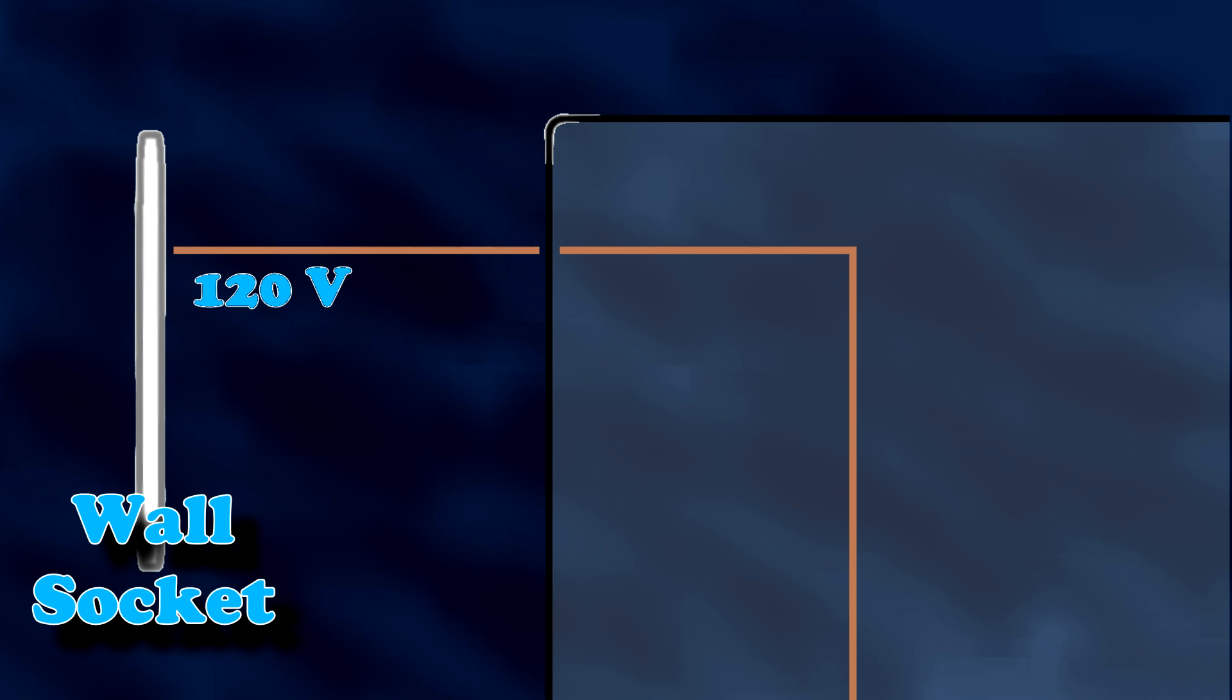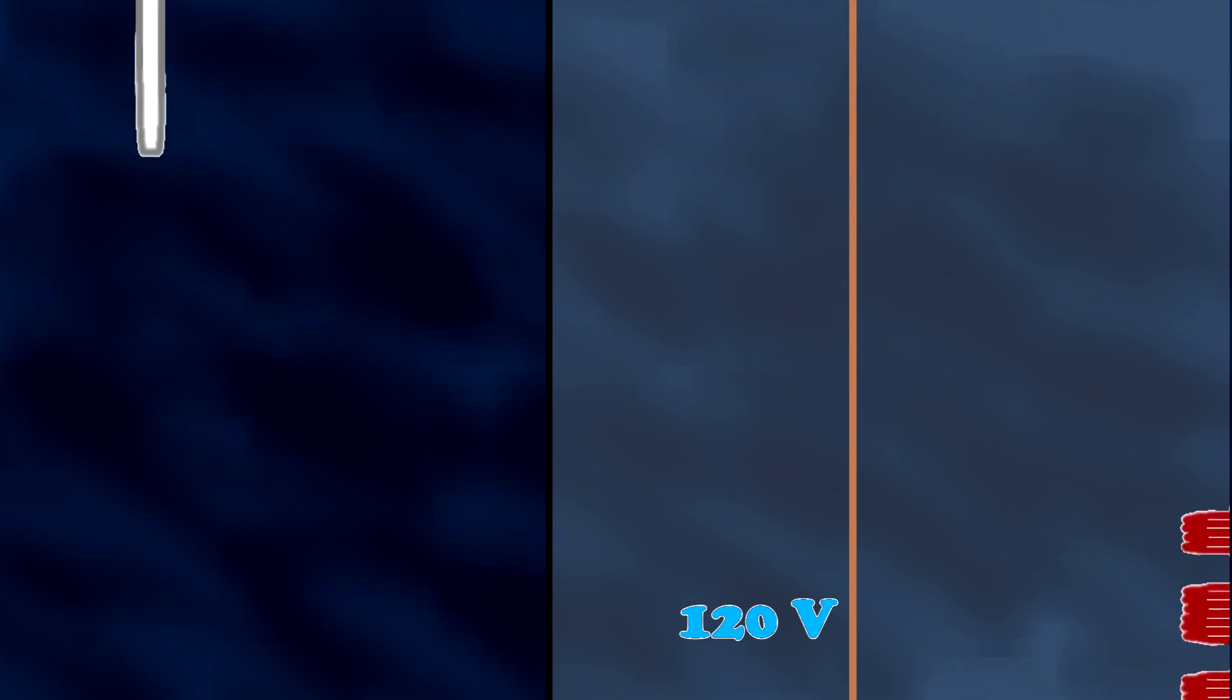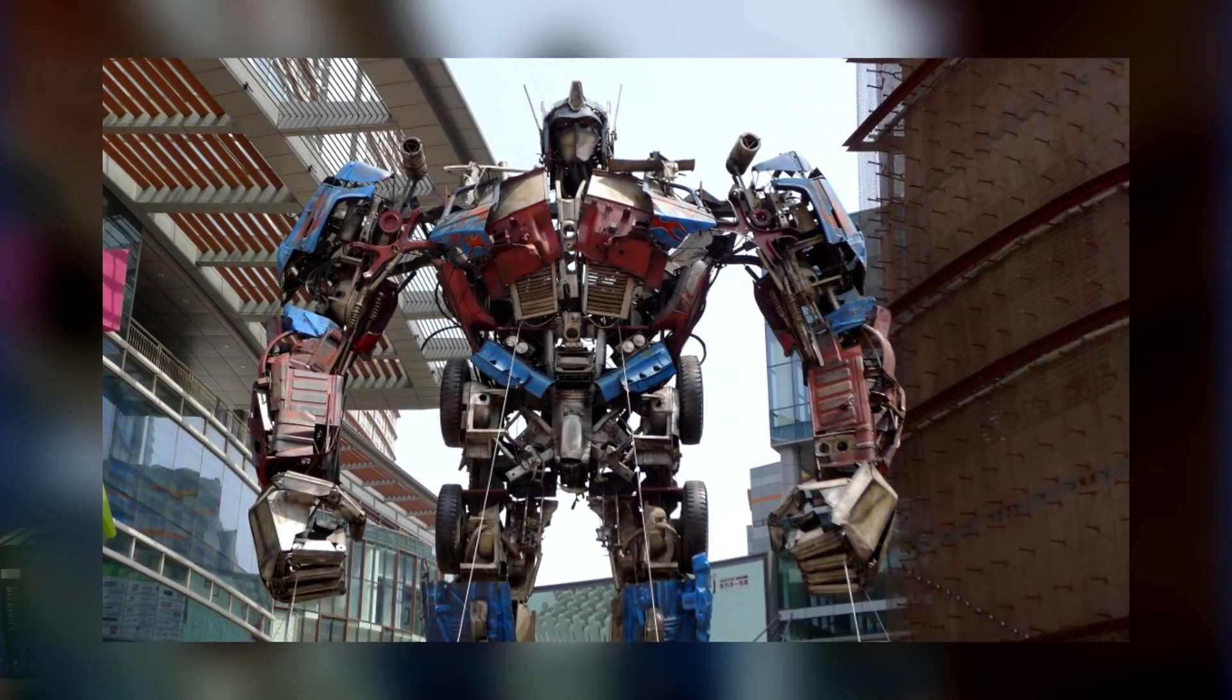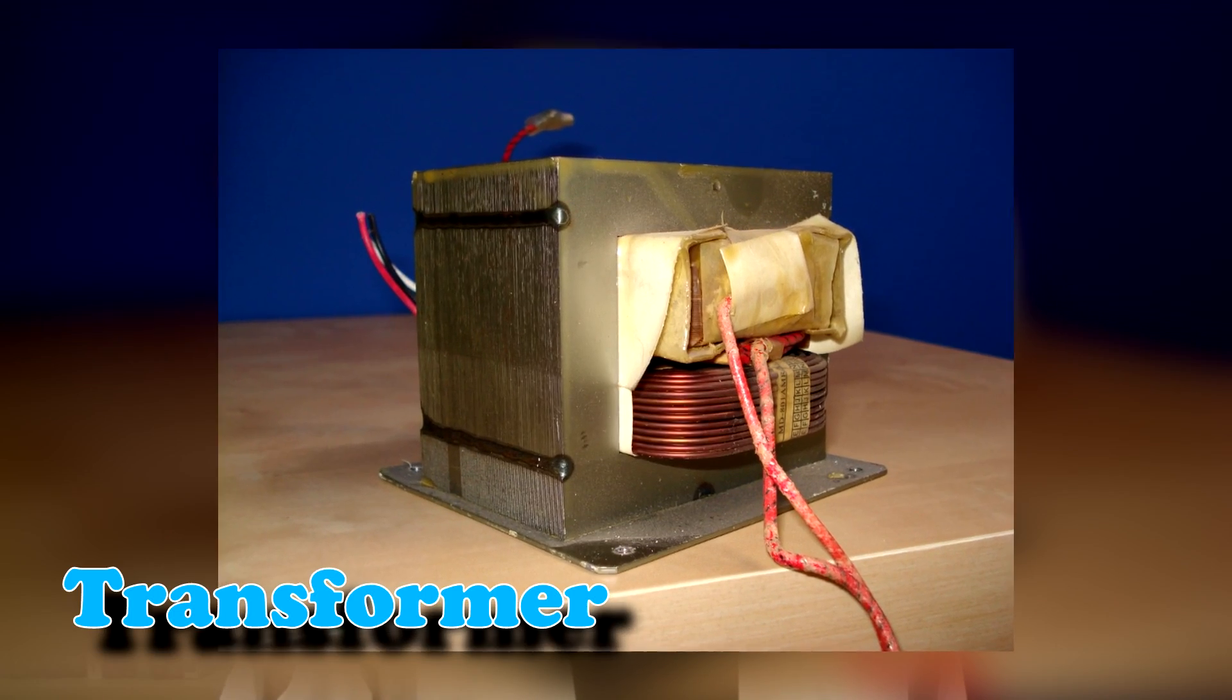Okay, so your wall socket provides about 120 volts, give or take. The power cord carries that voltage into the oven, where it encounters something called a transformer. No no no, a circuit transformer. That's better.